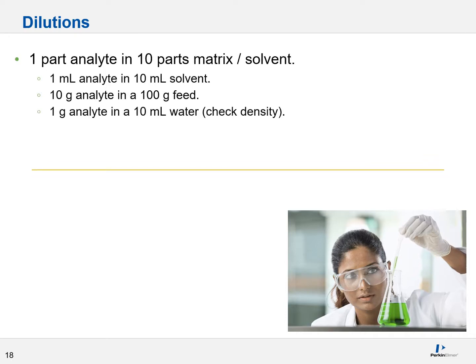Well, all of what I told you before is effectively saying that I need you to take 1 part analyte and put it in effectively 10 parts matrix or solvent. That means I could take 1 ml of analyte in a total 10 ml of solvent. I could take 10 grams of analyte in about 100 grams of total feed. I could take 1 gram of analyte in 10 ml of water, assuming my density works out. This all basically means 1 to 10. Just different ways of saying the same thing.